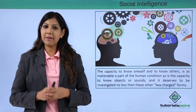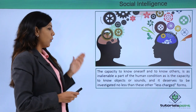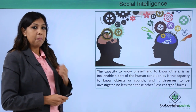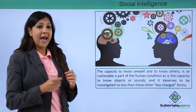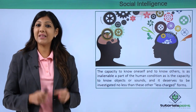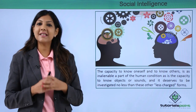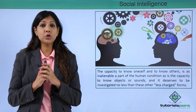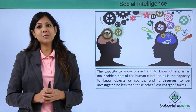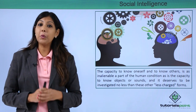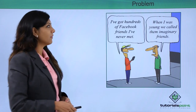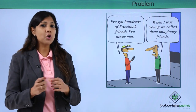What exactly do we mean by social intelligence? The capacity to know oneself and to know others is an inalienable part of the human condition, just as is the capacity to know objects or sound. It's important to know your strengths and weaknesses, and also know about other people, which can happen only when you communicate and build rapport with them.